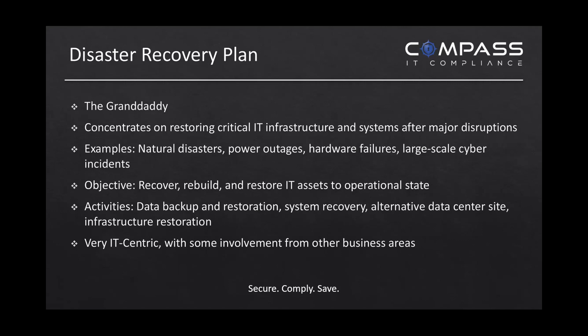The objective is — if you lose a server, if you lose a server farm, if you lose a data center, even if you get hit by ransomware — you're probably going to use the disaster recovery plan if you have systems that you have to recover and restore. The objective, as it says on the slide, is to recover, rebuild, and restore IT assets to the operational state. It kind of stops there — you've recovered from the disaster and you've got the IT assets back to the state they were before. We used to do bare metal restores, had to bring up the operating system, install all the programs, get the data files, then get the users.